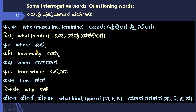Before we go to the next question, I would like to introduce you to some interrogative words. Kaha or Ka means 'who' in masculine or feminine. Kim means 'what' in neuter. Kutra means 'where.' Kati means 'how many.' Kada means 'when.' Kutah means 'from where.' Katham means 'how.' Kimartham means 'why.' Kidrishah means 'what kind of' in masculine, Kidrishi in feminine, and Kidrisham in neuter.